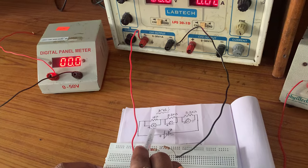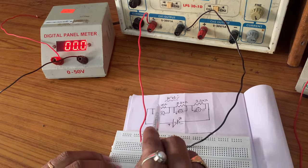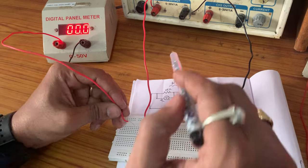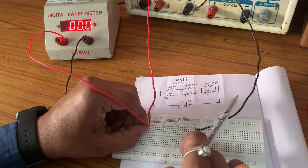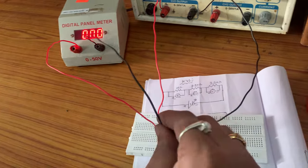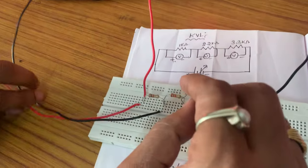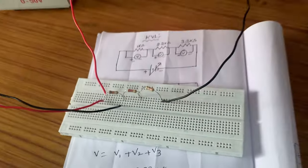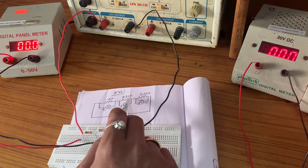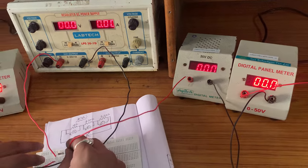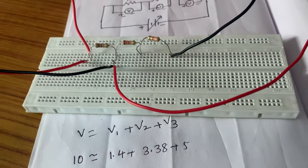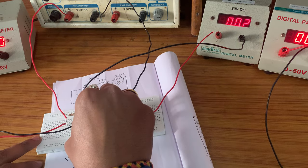Now I am connecting voltmeter V1. This voltmeter V1 is connected across the 1 kOhm resistor. Voltmeter V1 positive is connected to the 1 kOhm first terminal, and V1 negative is connected to the 1 kOhm second terminal. Next, I am connecting voltmeter V2. V2 positive is connected to the 2.2 kOhm first terminal, and V2 negative is connected to the 2.2 kOhm second terminal.